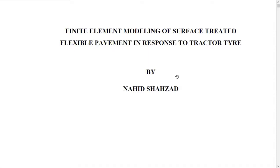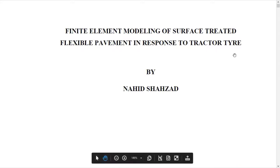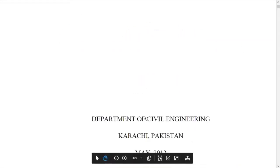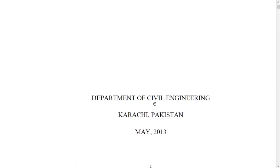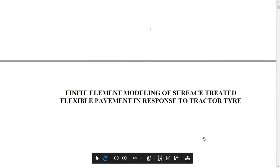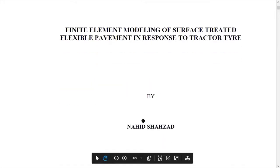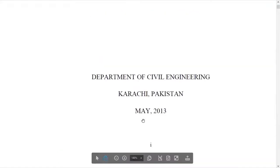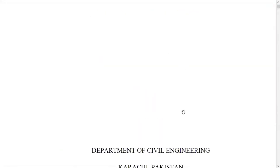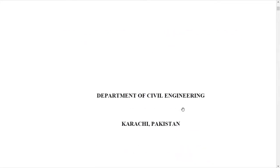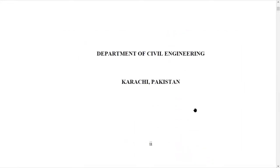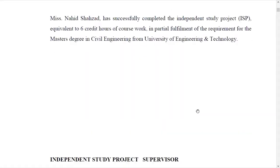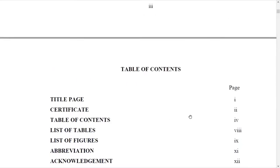I'm going to discuss my own conference paper which I completed in my masters. The title of my project was 'Finite Element Modeling of Surface Treated Flexible Pavement in Response to Tractor Tire.' This was the first page of my report, where I wrote the department, the year, and the month. There must be a monogram in the center of your first page, and these pages should be numbered in Roman numerals. Then you have the certificate page, and then you provide the independent study project with your supervisor's name.